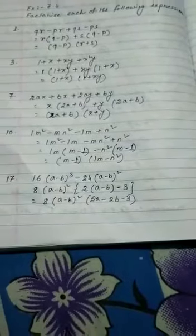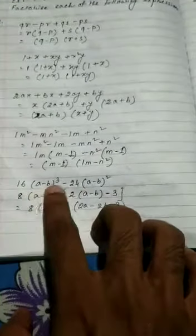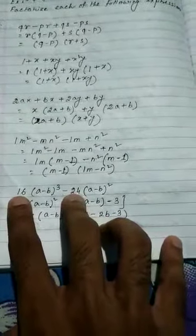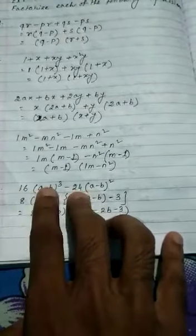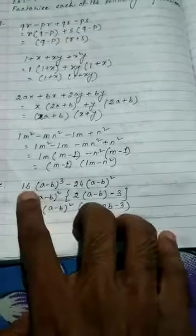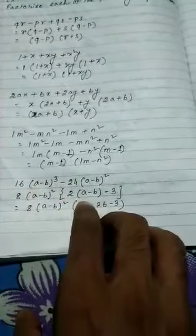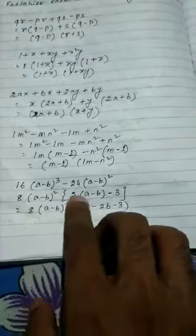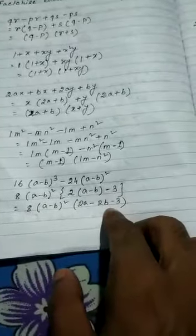Next, number 17: 16 times A minus B cube minus 24 times A minus B squared. What we can see? 8 we can take common from 16 and 24. And A minus B appears 3 times and 2 times, so 2 times we can take common. So 2 and one A minus B is left, and from there minus 3. So 8 into A minus B whole squared into 2A minus 2B minus 3. That is the answer.